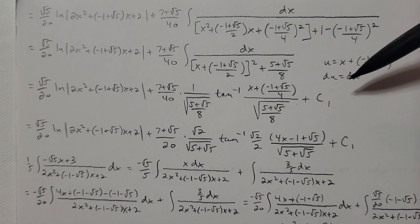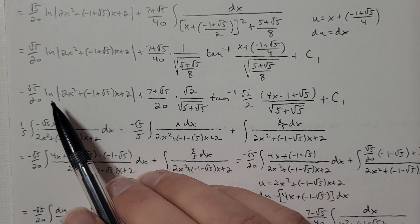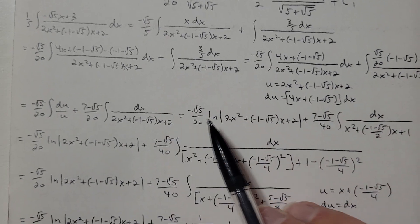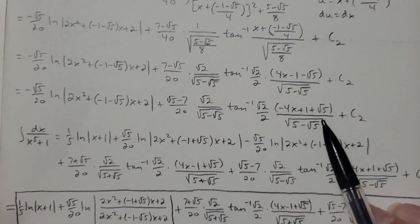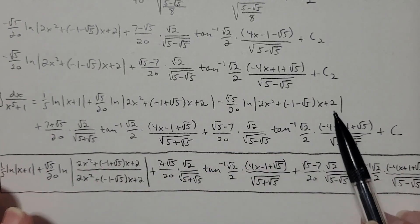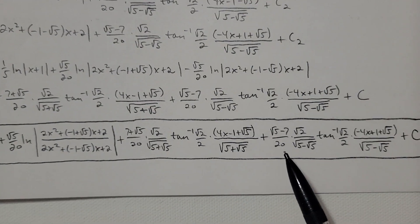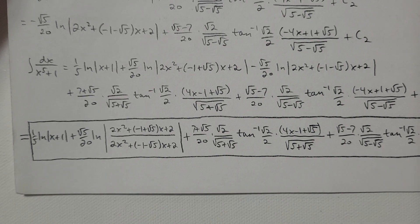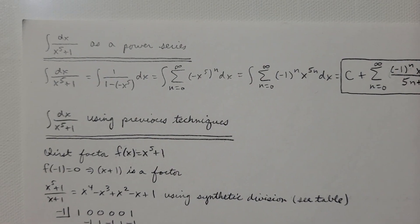That remaining piece involves factoring, a tangent-inverse form, and substitution — and that's just the first quadratic integral. Then there's the second quadratic integral which requires essentially the same process. When all three integrals are combined, the final answer for ∫1/(x⁵+1)dx is this large, messy expression.